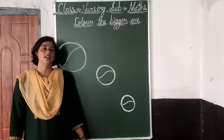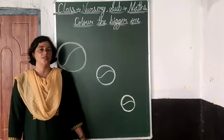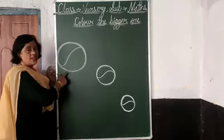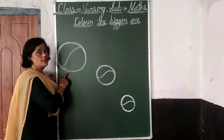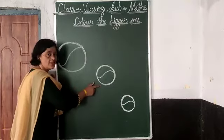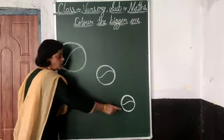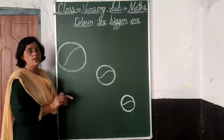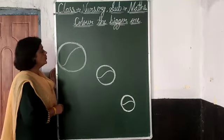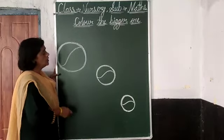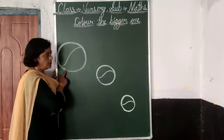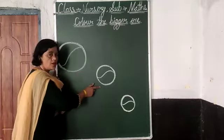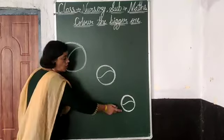Children, see the different sizes of balls: big size, medium size, small size. So now we will see which one is the big ball. This is a big ball. Medium ball, small ball.